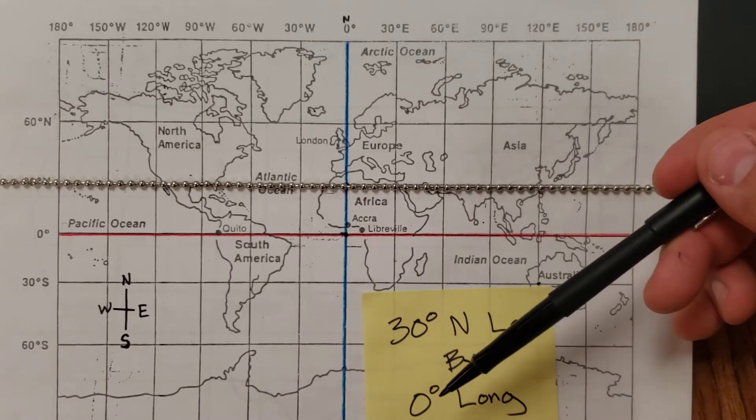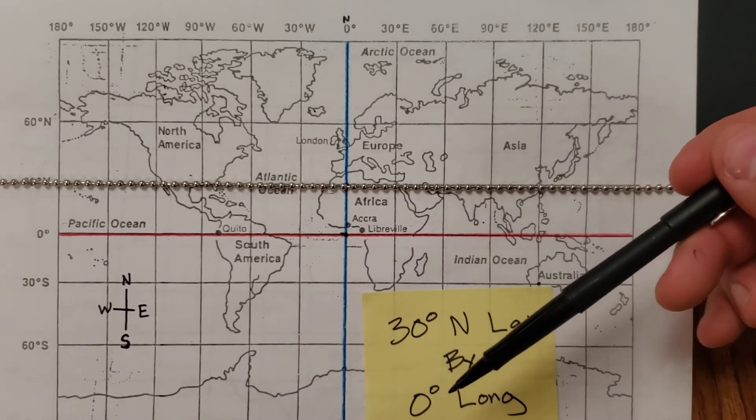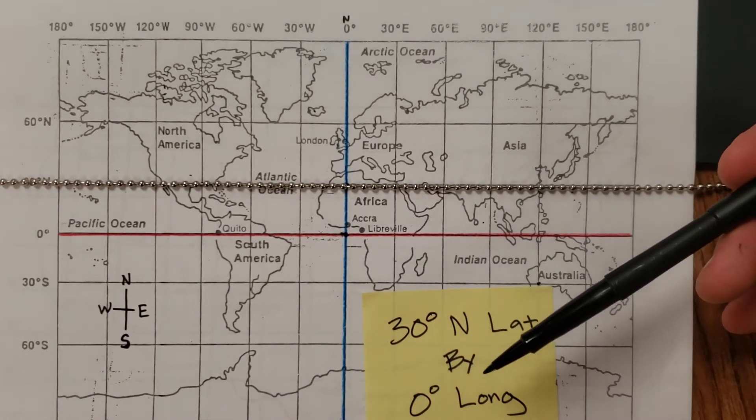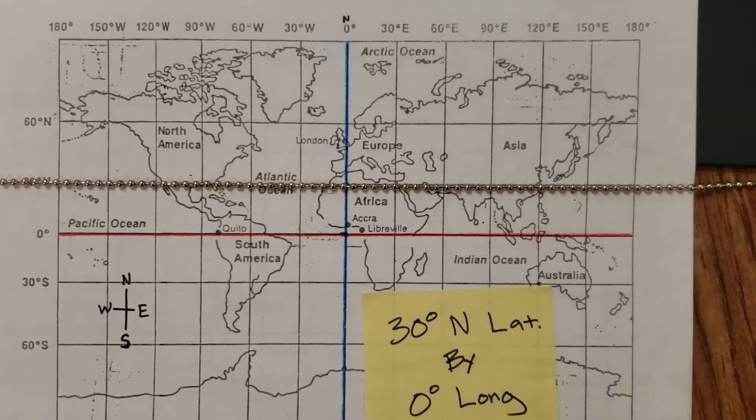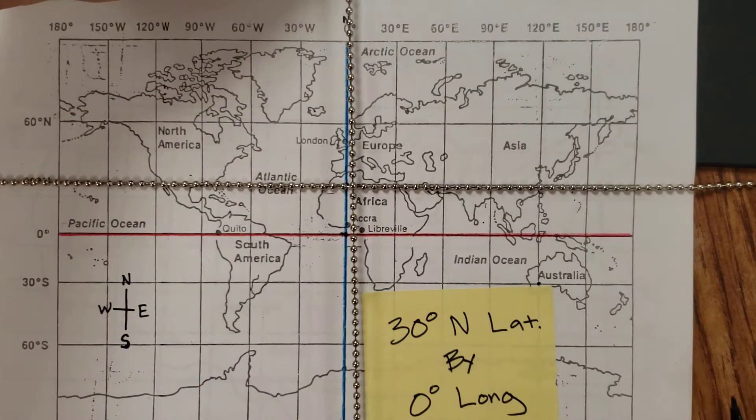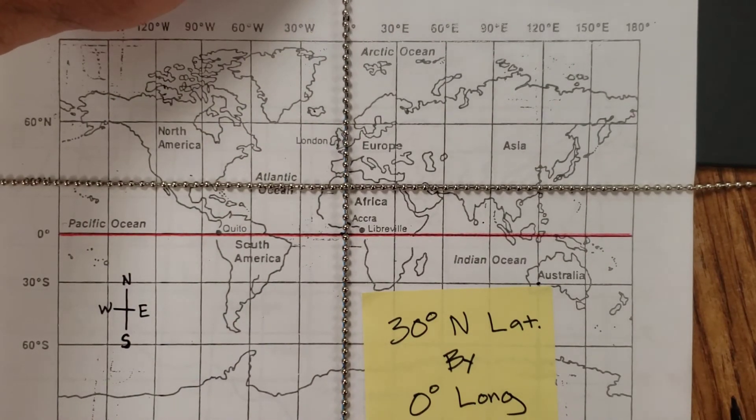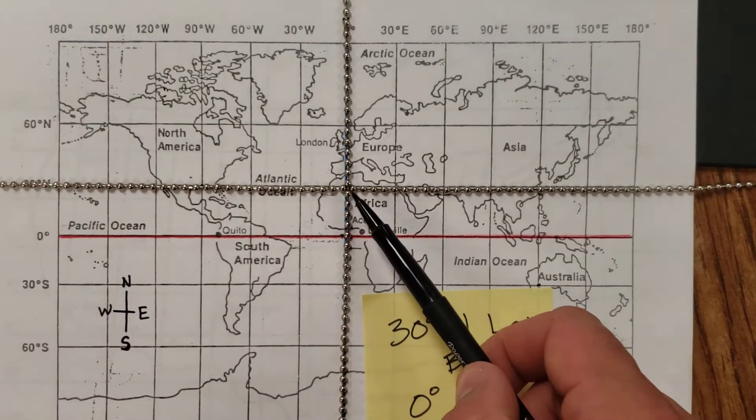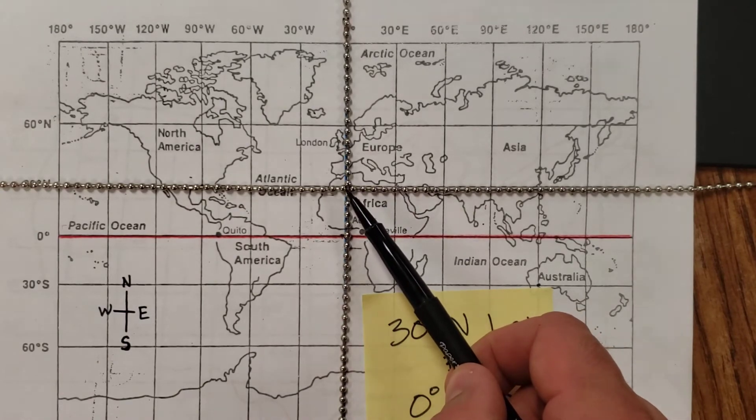And then our next coordinate down here is zero degrees. Well, they didn't give us east or west this time. They just said zero degrees longitude. Can that happen? Sure it can. Because zero degrees longitude, don't forget, is your prime meridian. So right where those two intersect.